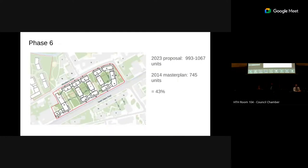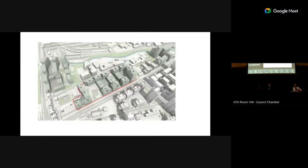Phase six is just to the north of Seven Sisters Road. It proposes a new public open space in the west of the site and a smaller section to the east. This also proposes two towers of 18 stories at either end of Seven Sisters Road. This phase also includes the reprovision of the Edge Youth Centre.